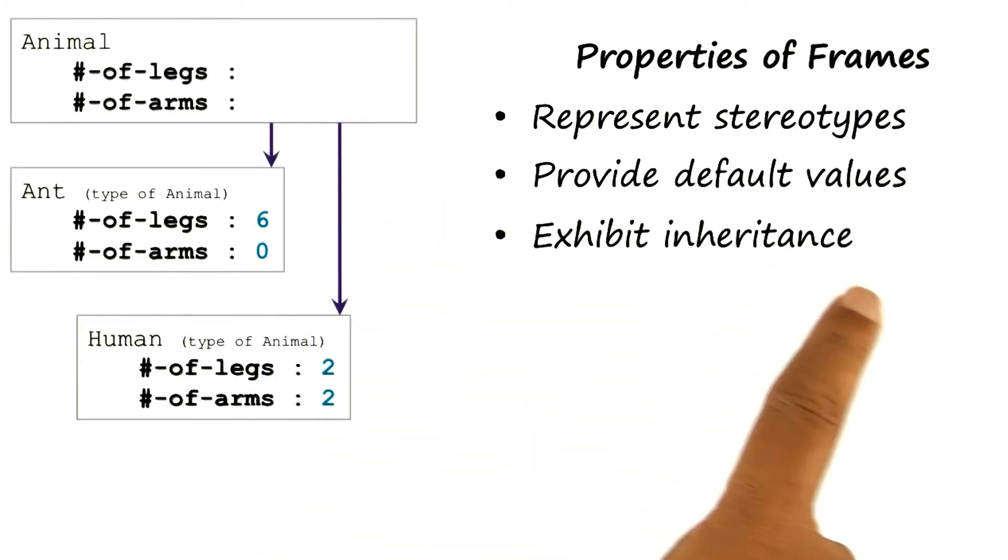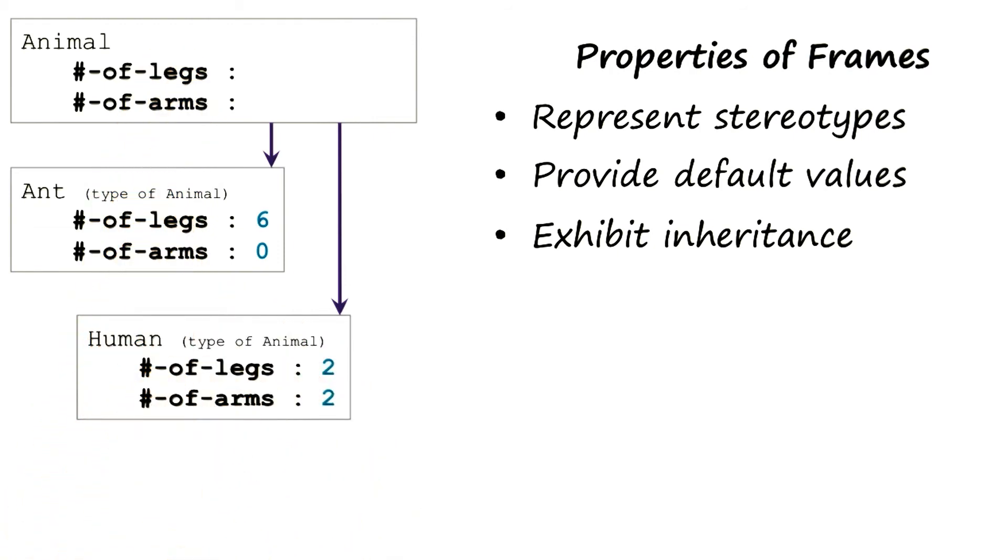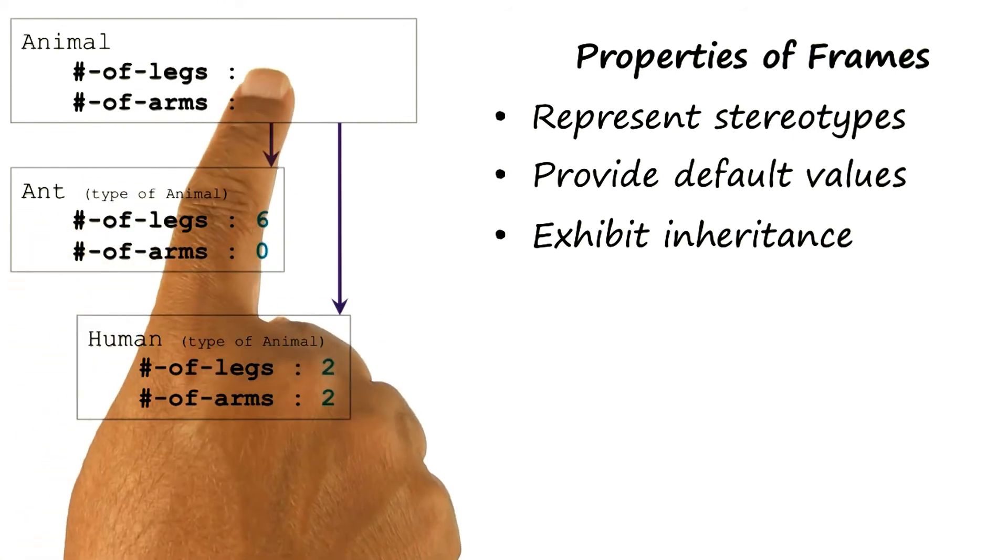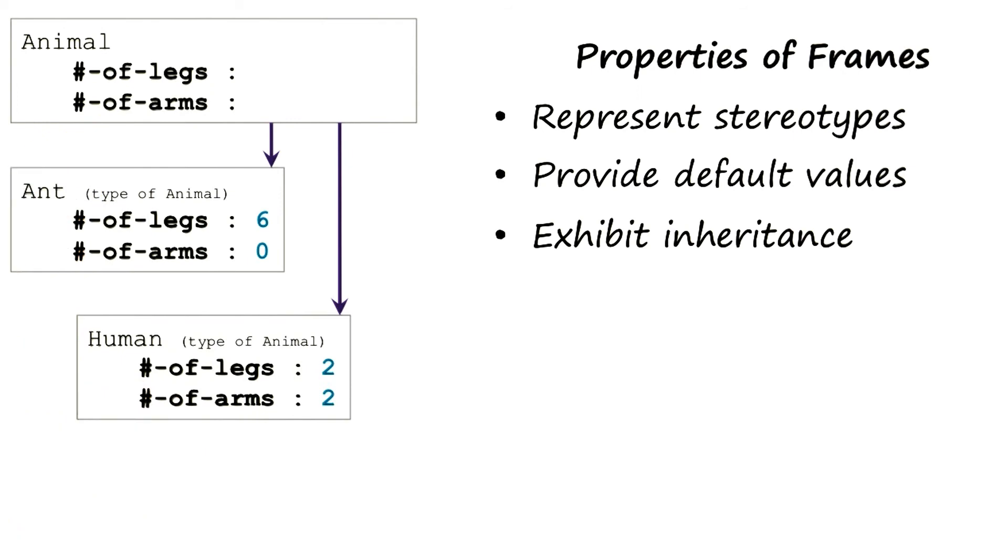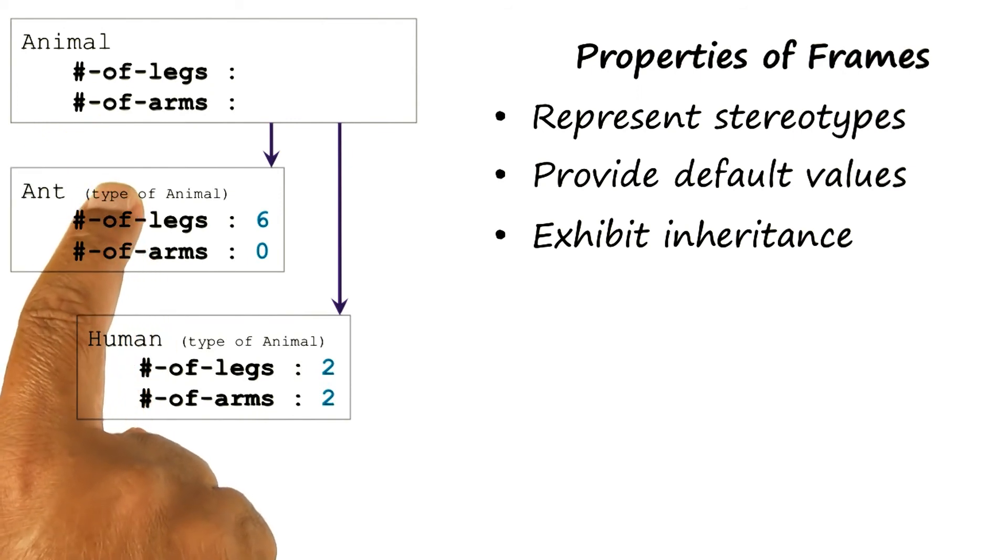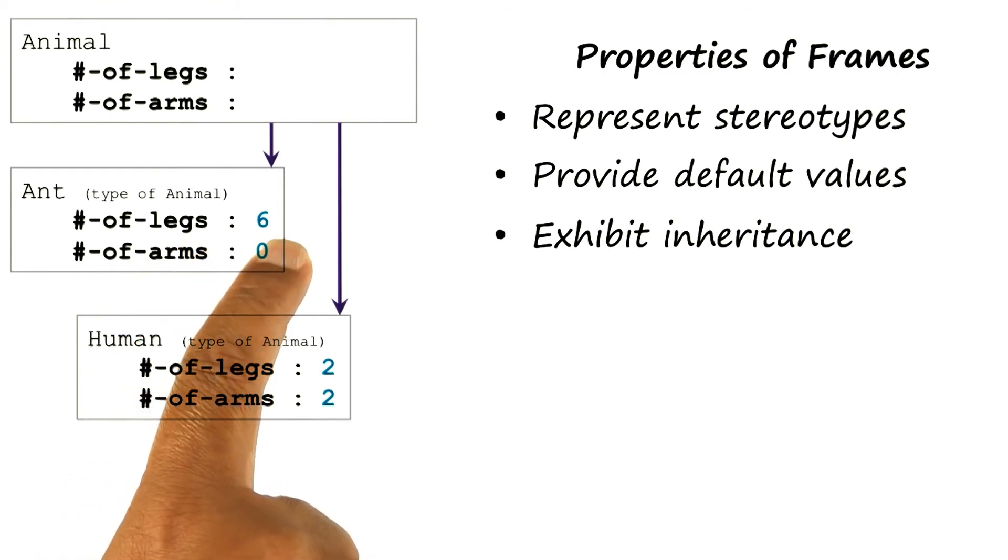The third cardinal property of frames is that they exhibit inheritance. So I can organize these frames in a frame hierarchy. Here is a frame for an animal, and then that has two subclasses, a frame for an ant and a frame for a human. Note I'm using the language of classes and subclasses here. Now inheritance works in that I may have some slots for the class animal. And then I may specify for the ant more specific values for some of those slots.